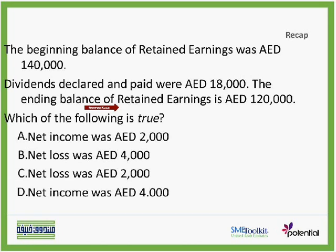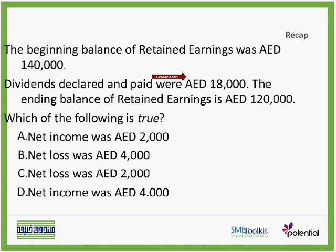Let's think about it mathematically. We start with retained earnings of $140,000 and add net income. We paid $18,000 in dividends, so we are left with $122,000. The ending balance was $120,000, so there is a $2,000 difference — there is a number that has reduced my ending balance in retained earnings by $2,000.